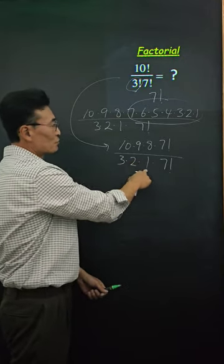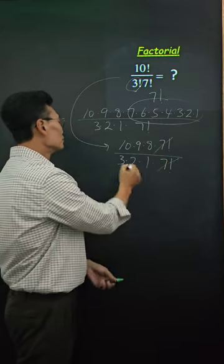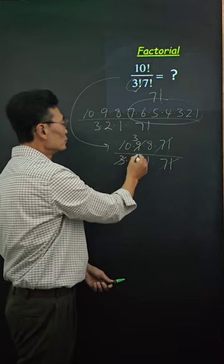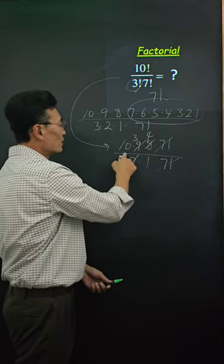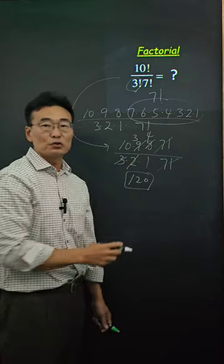And of course we have the 3 times 2 times 1 from the 3 factorial. Cancel out the 7 factorials, reduce the 3 and the 9, reduce the 2 and the 8, and we're left with 10 times 3 times 4, which gives us 120.